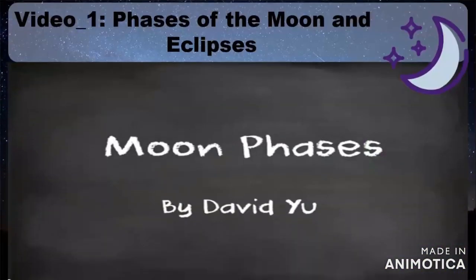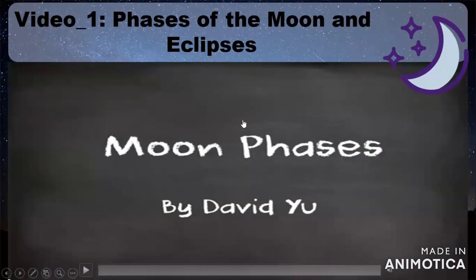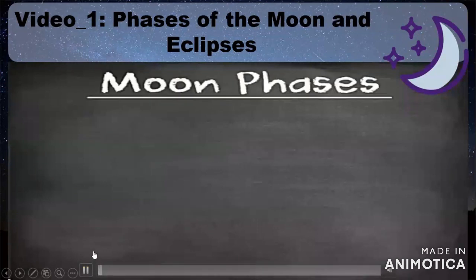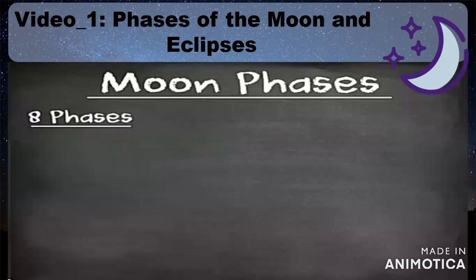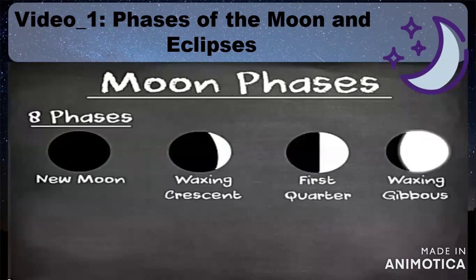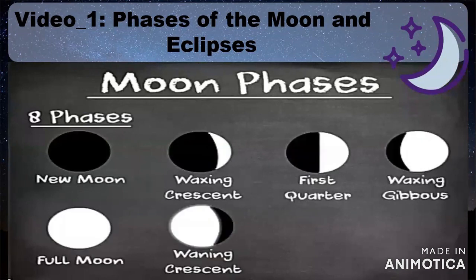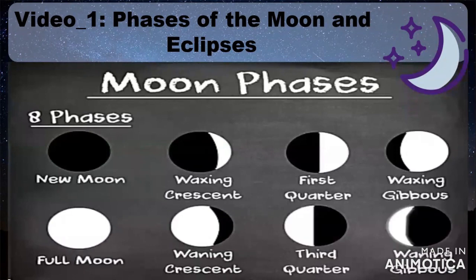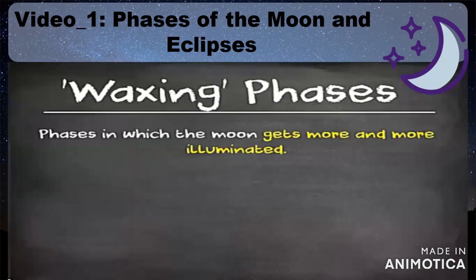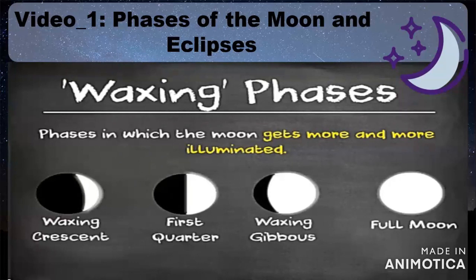Let us now watch the video about moon and eclipses. In total there are eight phases, in this order: new moon, waxing crescent, first quarter, waxing gibbous, full moon, waning crescent, last quarter, waning gibbous, and finally back to the new moon. Waxing phases are phases in which the moon gets more and more illuminated — these are the waxing crescent, first quarter, waxing gibbous, and the full moon.